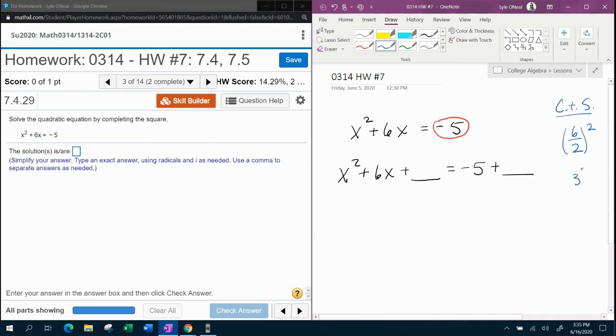So half of 6 is 3. 3 squared is 9. And this is our special number that we're going to add to both sides.